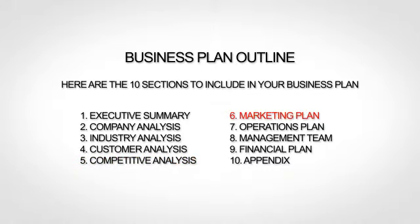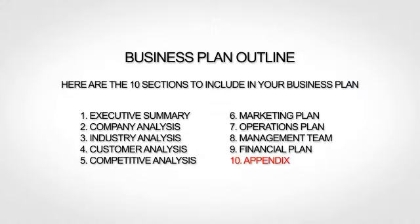The sixth section is your marketing plan, where you lay out your marketing strategy. The seventh section is your operations plan, where you explain how you actually run or will run your business. The next section, the management team, is where you provide bios of your team. The ninth section is your financial plan, where you give financial forecasts. And finally, the tenth and last section is your appendix, where you provide any additional supporting information.